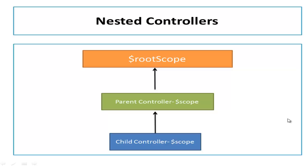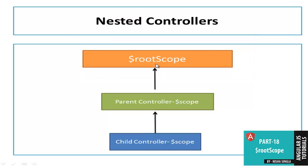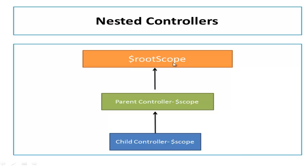In my previous videos, we have discussed about scope that acts like a glue between controller and the HTML page. Each controller has its own scope object. So when we define nested controllers, the child controller will inherit the scope from its parent controller. From this diagram, you can understand if you have a parent controller and inside that you have one more controller that acts like a child controller. The root scope is also mentioned here — we discussed that in an Angular application there is a root level scope. If you didn't cover my previous video on root scope, click on the link below. Let's understand with a practical demonstration how nested controllers work in AngularJS.